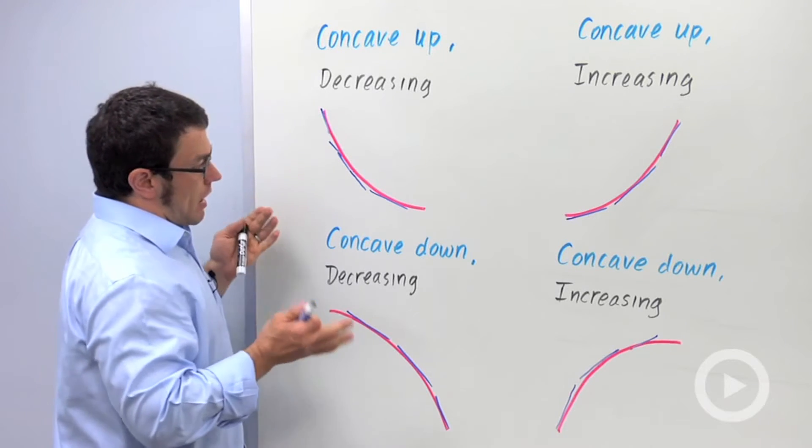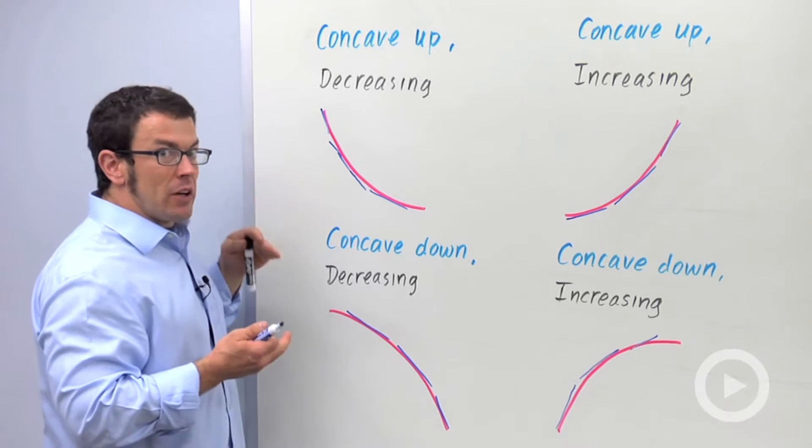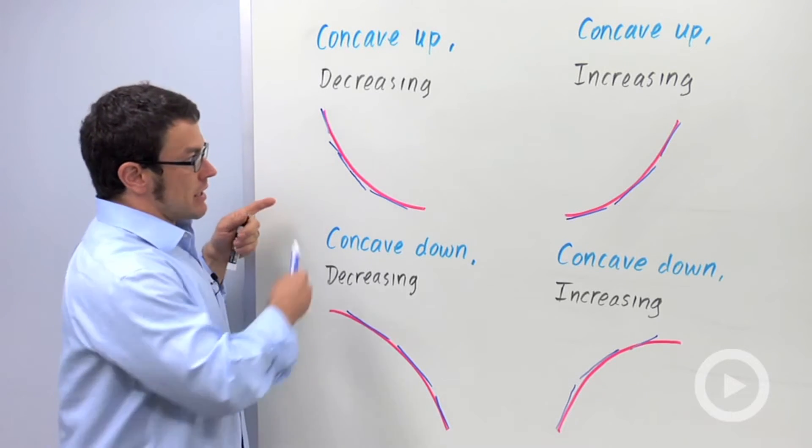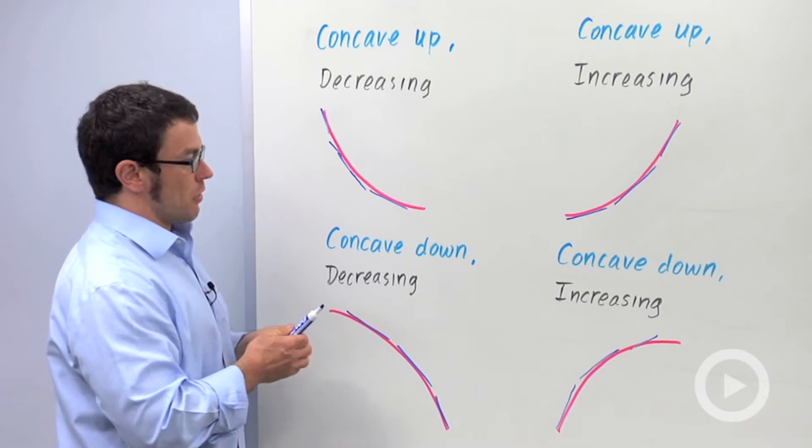A concave up or concave down graph can be increasing or decreasing, and that's why we get these four different kinds of curves.